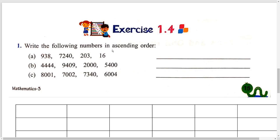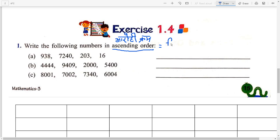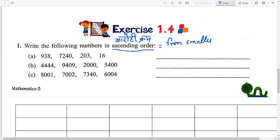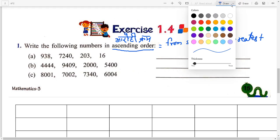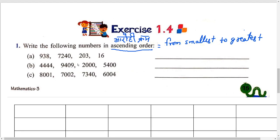Ascending order — ascending mein kya hota hai? It means from smallest to greatest. From smallest to greatest.